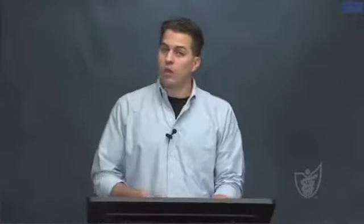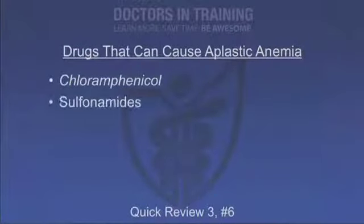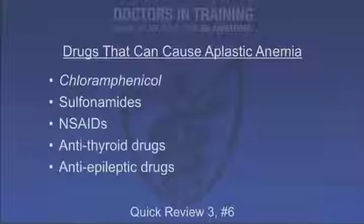Question 6: What drugs are known for causing aplastic anemia? The list worth knowing for USMLE Step 1: chloramphenicol, sulfonamide antibiotics, NSAIDs such as indomethacin, anti-thyroid drugs including propylthiouracil (PTU) and methimazole, and anti-epileptic drugs including carbamazepine, valproic acid, and phenytoin.